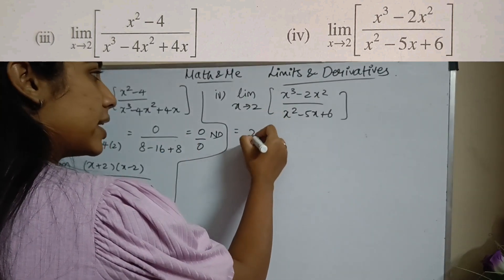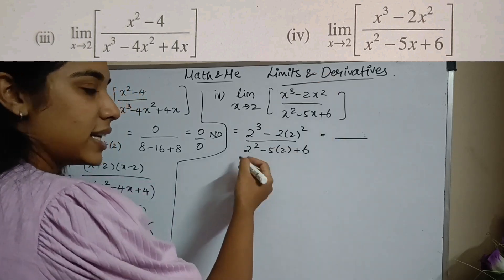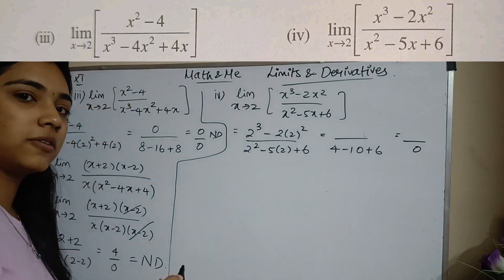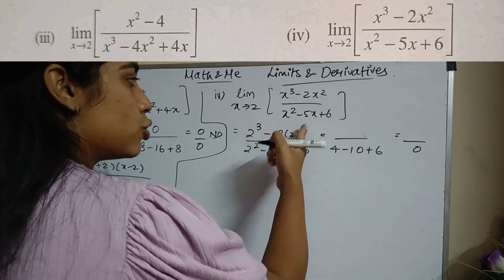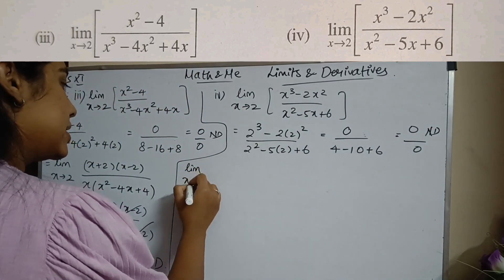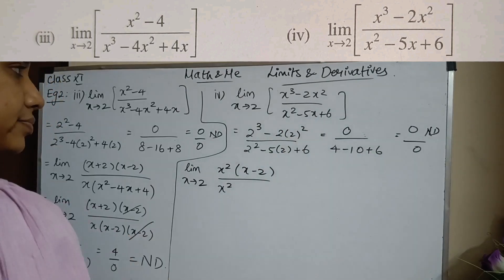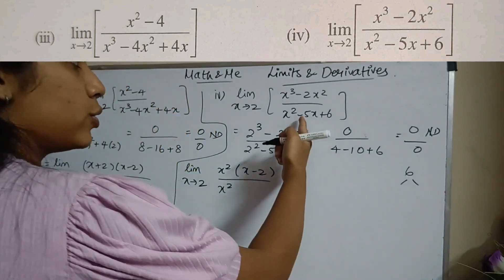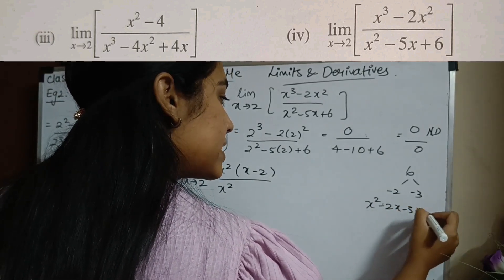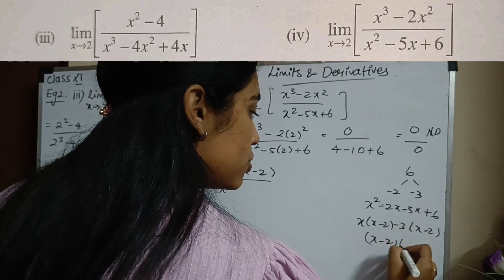Moving to subsection 4, substituting x = 2: numerator is 2³ - 2(2²) = 8 - 8 = 0, and denominator is 2² - 5(2) + 6 = 4 - 10 + 6 = 0, giving 0/0. Taking x² outside the numerator gives x²(x - 2). For the denominator, I want product 6 and sum -5, so factors are -2 and -3, giving x² - 2x - 3x + 6 = x(x-2) - 3(x-2) = (x-2)(x-3).